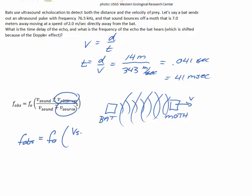V sound plus or minus V, and V sound minus or plus V. And the V of the moth is going to appear on both the top and the bottom. In this case, because the moth is moving away, we're going to use the minus sign on the top,